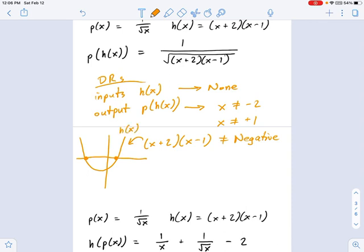What's this thing? This is h of x. So, where is that negative? Well, it's this whole area. This is all domain restrictions. That whole area is forbidden.